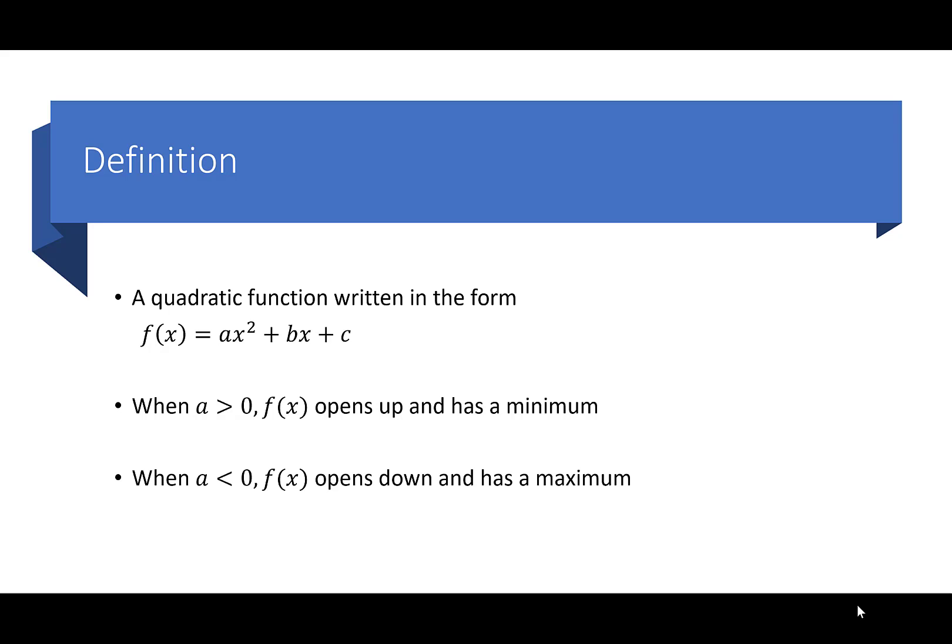I will kind of go back and forth between a quadratic function and parabola, but they mean the same thing. A quadratic function can be written in the form f(x) = ax² + bx + c. When a is greater than zero, f(x) is going to open up and it's going to have a minimum.